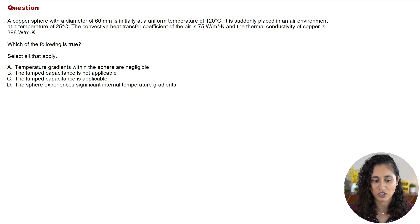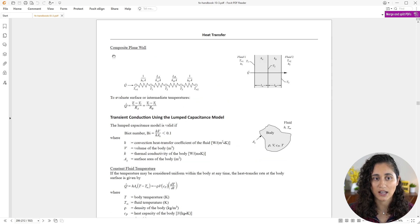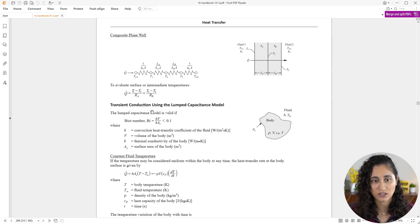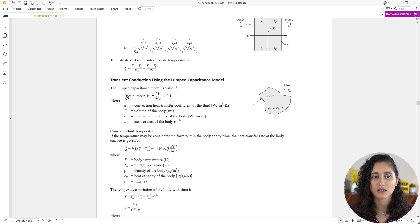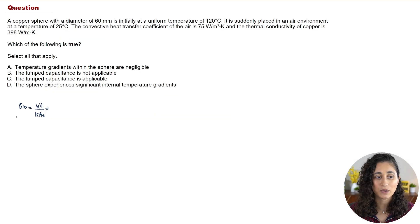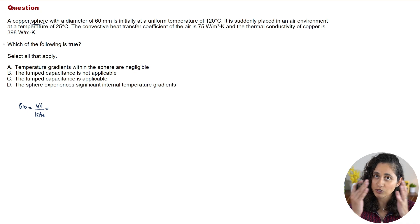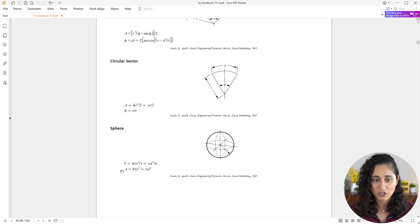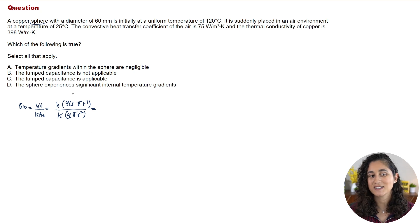Let's go to the reference handbook. Under the heat transfer section, under conduction, we find transient conduction. It states the lumped capacitance model is valid if the Biot number is less than 0.1, and the Biot number equation is given there. Let's write this equation down. In the equation we have volume and area — specifically the volume and area of a sphere, since our object is spherical.